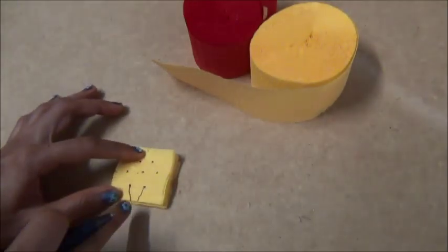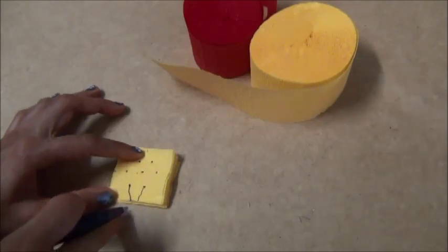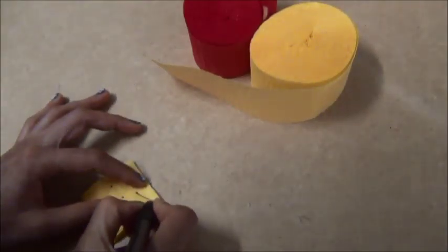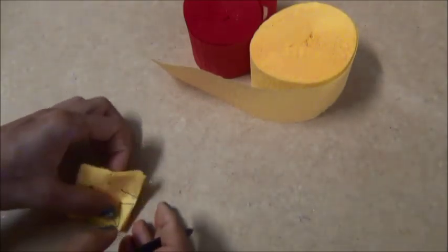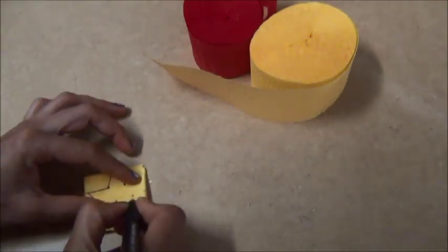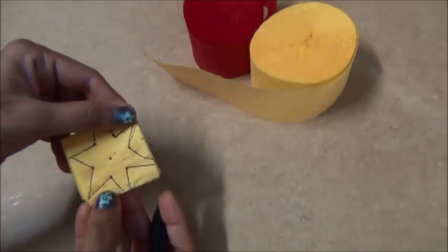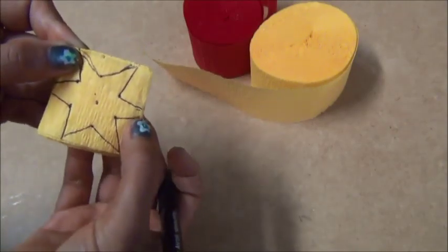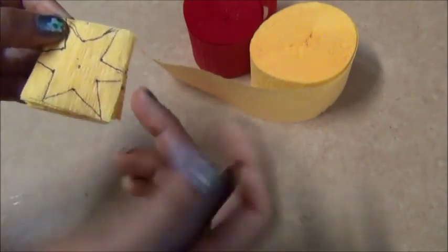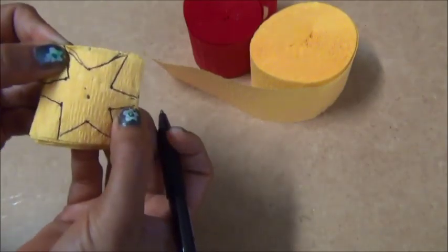The main thing here is we should not join these two lines here. Here we can join. Here we can join. Here we should not join. Here and here the lines are not joining. There is some gap between them. This is the main thing we have to note when we do the streamers.